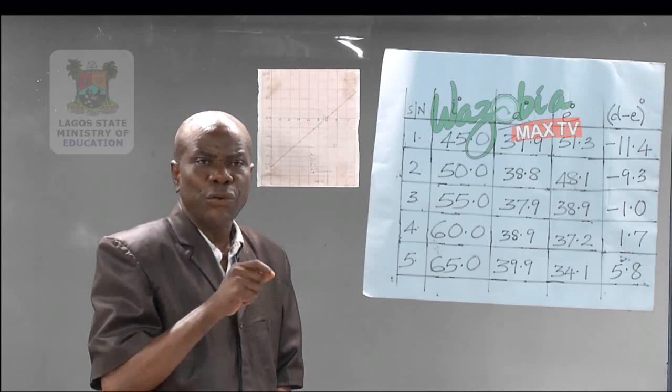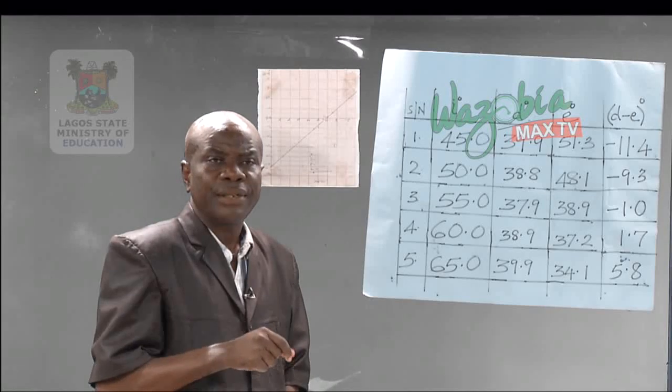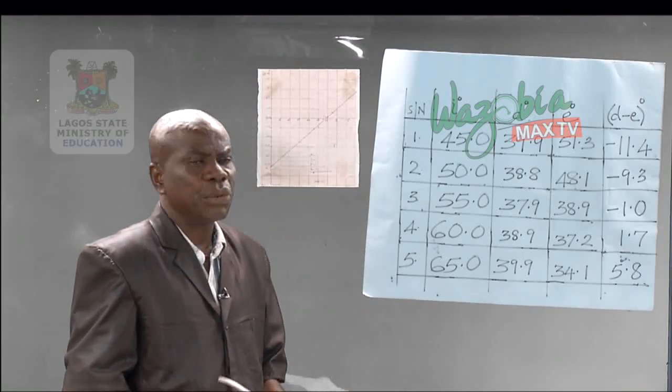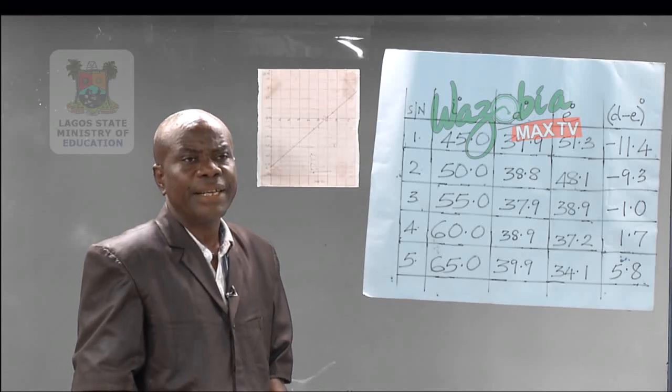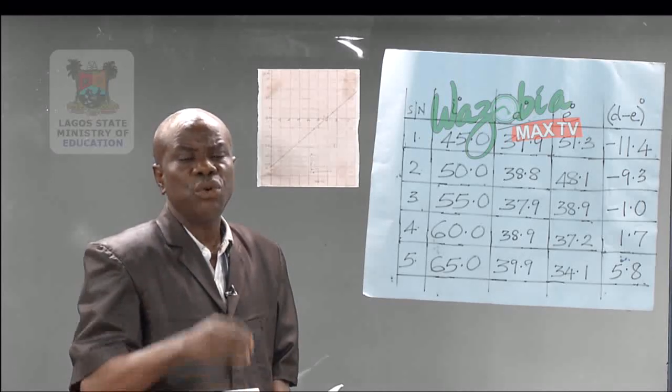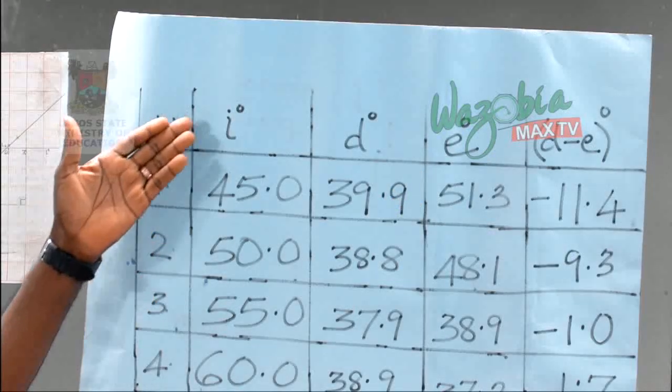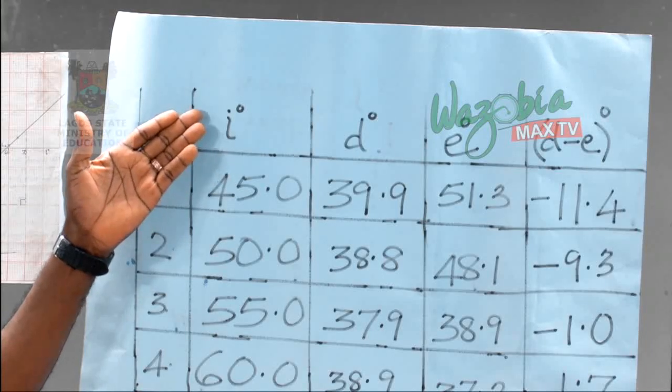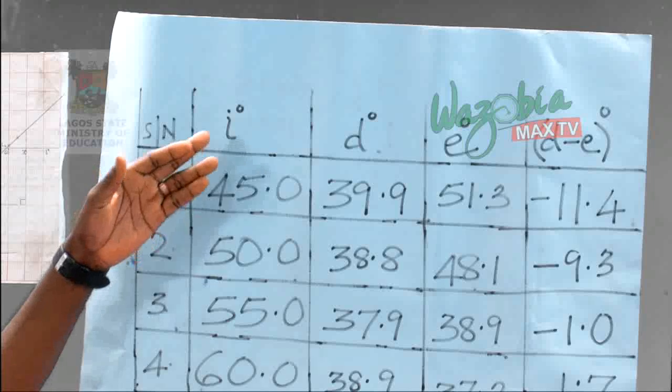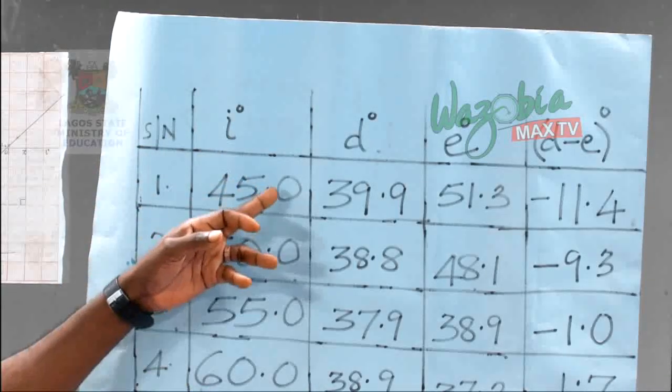You have to be consistent with the way you record your figures. If you look at the table I have in front of me here, look at the angle of incidence. We are still going to look at the question. This is the angle of incidence. Look at the number of decimal places—it is one throughout. That is what is meant by being consistent.